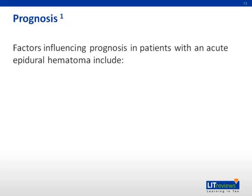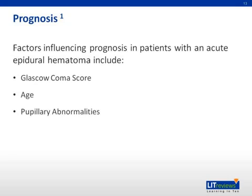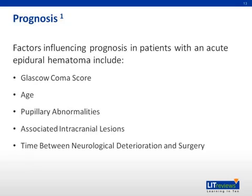Predicting individual outcomes is difficult, but several factors have been identified in estimating prognosis: a patient's Glasgow Coma Score, their age, the presence of pupillary abnormalities, other intracranial lesions seen on imaging, the time delay between neurologic symptoms and surgery, and intracranial pressures have all been identified as useful factors in predicting a patient's chance for survival.